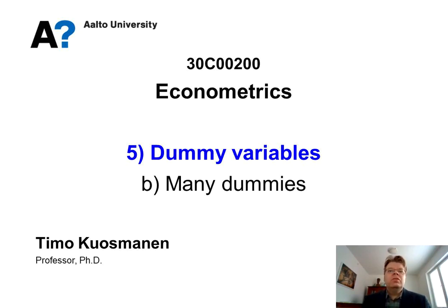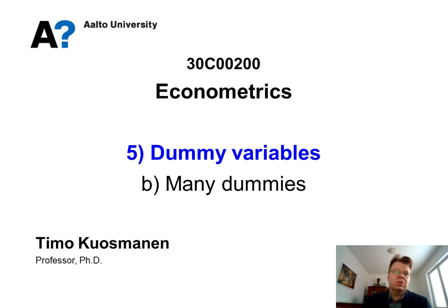In the previous lesson I introduced the notion of dummy variables and how to interpret them — in that case it was a yes or no question with two possibilities. Either there is an elevator in the apartment or there is not. The purpose of this lesson is to expand that to situations where we might have many categories, and perhaps also ordinal categories.